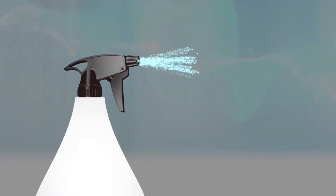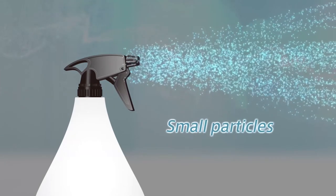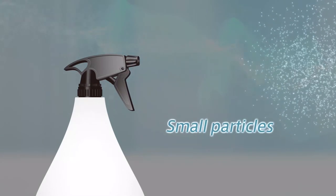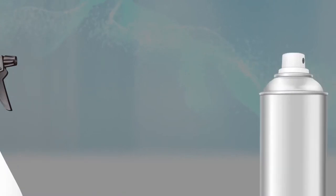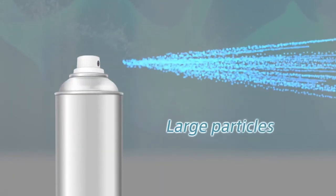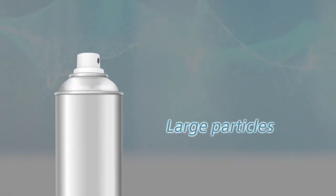For example, deodorizer sprays must produce microparticles small enough to float on air for a certain amount of time. Insecticides are typically large particles suitable for hitting a target.